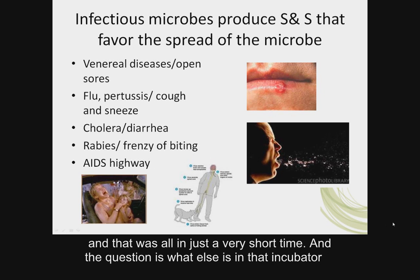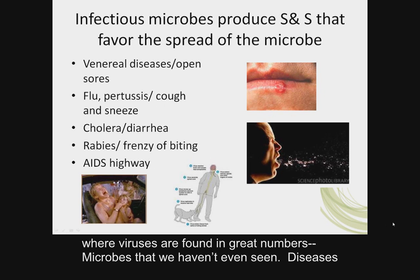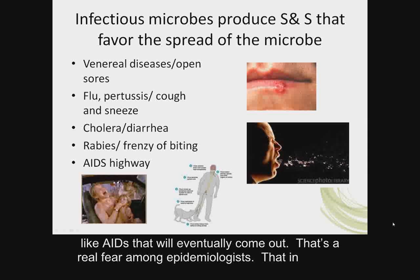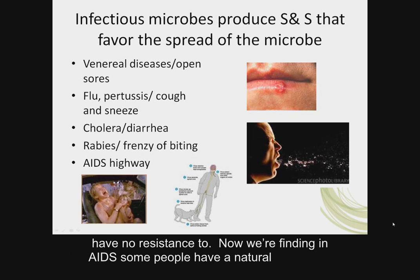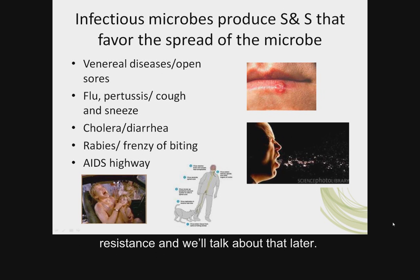The question is, what else is in that incubator where viruses are found in great numbers — microbes we haven't even seen yet, diseases like AIDS that will eventually come out? That's a real fear among epidemiologists: that in the incubator of forest and jungle, there are diseases we haven't seen yet and have no resistance to. Now we're finding in AIDS some people who have a natural resistance, and we'll talk about that later.